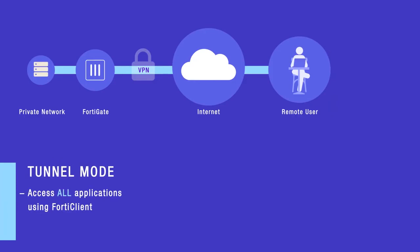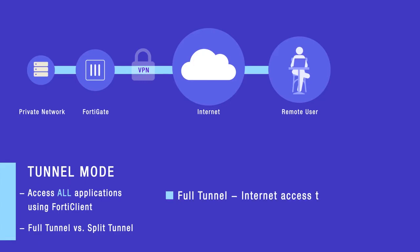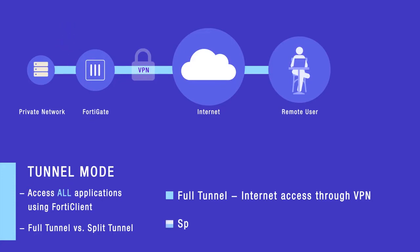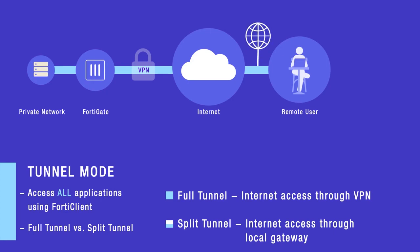SSL VPN tunnel mode can be configured as full tunnel or as split tunnel. In the full tunnel mode scenario, the remote user will access the internet via the secure tunnel using FortiClient. This can cause heavy load on the VPN connection and slow the connection speed. In split tunnel mode, the remote user will access the private network through a secure VPN tunnel using FortiClient, but will still be able to access the internet directly without going through the SSL VPN.